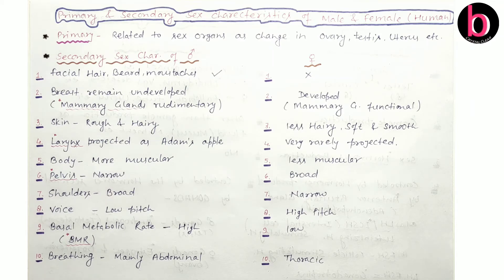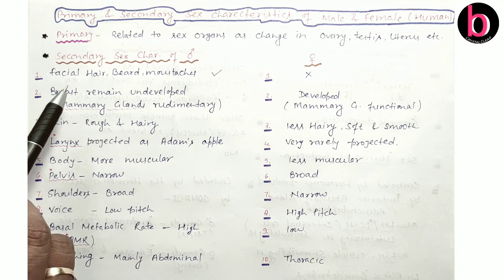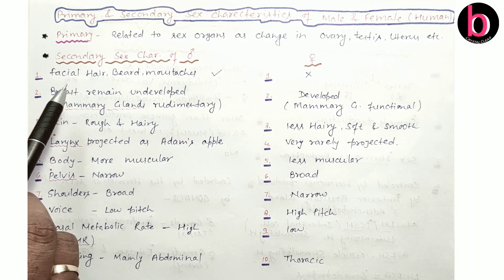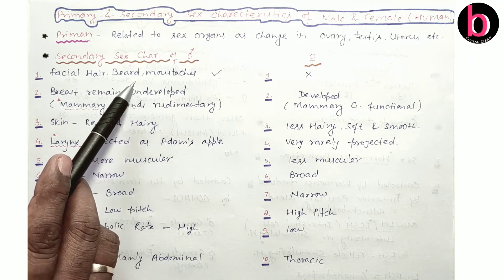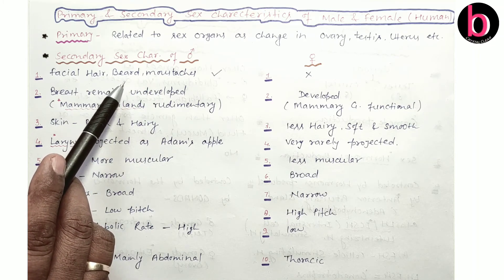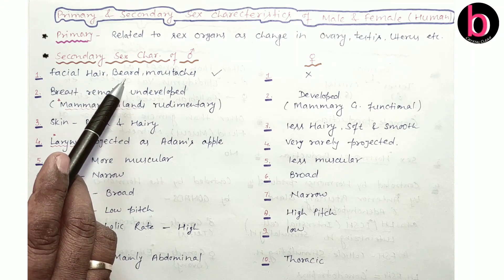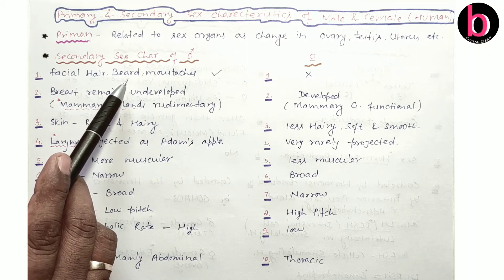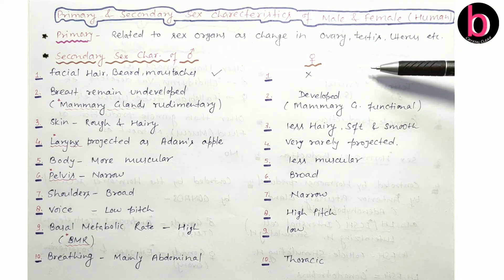Now, secondary sexual characteristics of male and female, given here on the basis of differences. First, for secondary sexual characteristics of male: the presence of facial hair — beard and moustache — is mainly because of the male sex hormone testosterone, which belongs to the group known as androgens. This is mainly present in human males. In some rare cases it may also be present in females, usually absent in females, but sometimes present due to hormonal imbalance.